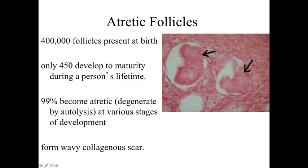The majority of follicles aren't going to develop to the mature Graafian stage and result in ovulation. Most follicles are going to become atretic at some stage — whether at the primordial, primary, or secondary stage. The ones that don't produce an ovulated egg are going to degenerate through the process of autolysis, essentially a programmed cell death where a wavy scar formation forms. Over time, these are minimized by macrophage activity, leaving a small scar within the ovarian cortex.